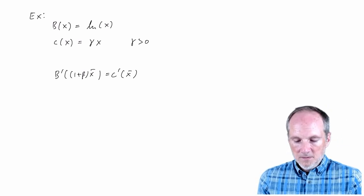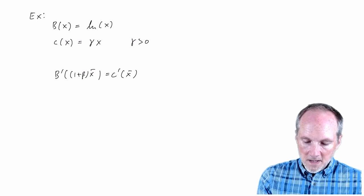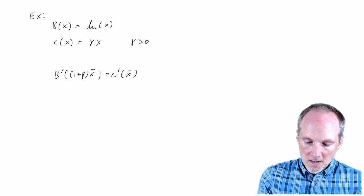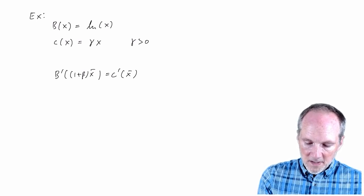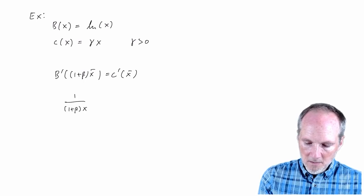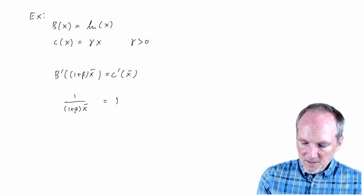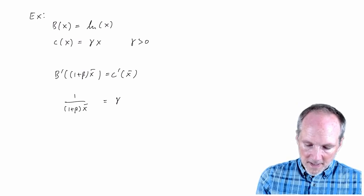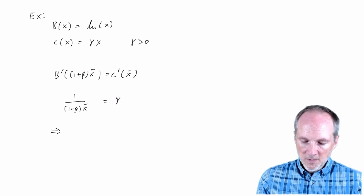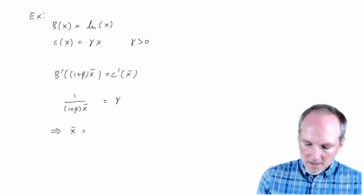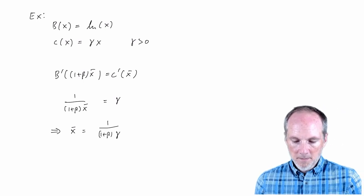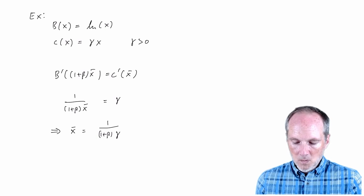So with these functional forms we just can rewrite this. The derivative of natural log of x is 1 over x, and so that's going to be 1 over 1 plus beta x bar. And this marginal cost is just going to be gamma. So that means that with these functional forms, if we solve for x bar, that's going to be 1 over 1 plus beta gamma.